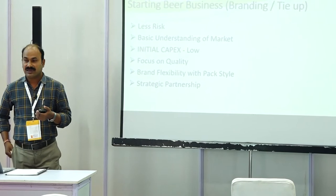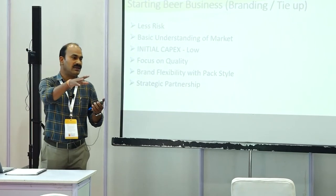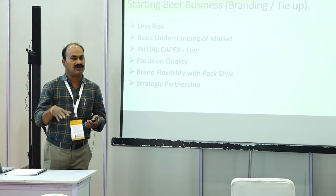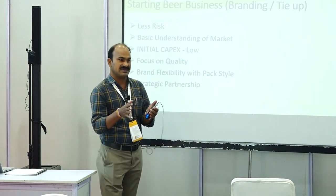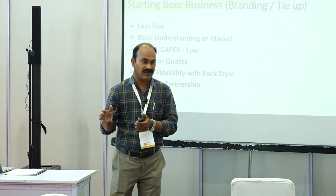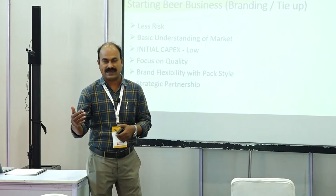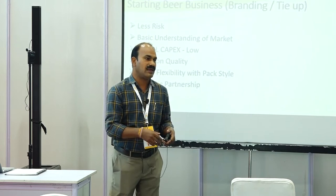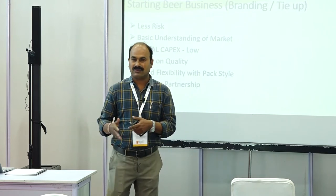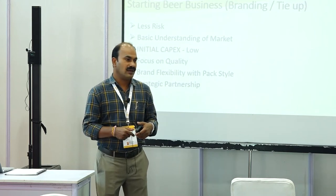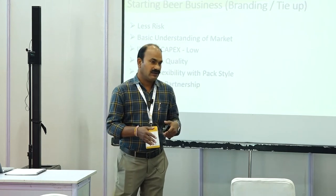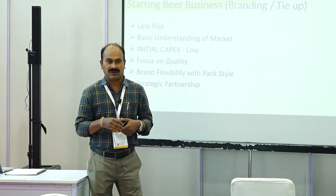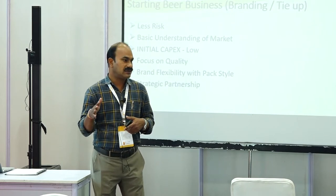Brand flexibility also involves pack size. If a brewery has a 650 ml bottling capacity, you need a 650 ml tie-up. If you want 330 ml, you need change parts for the bottling line, which requires additional budget. You need to calculate whether your budget matches the cost of those change parts and whether the volume of 330 ml business justifies it.